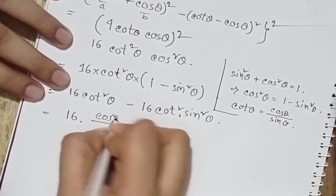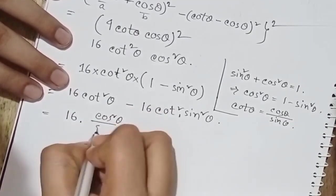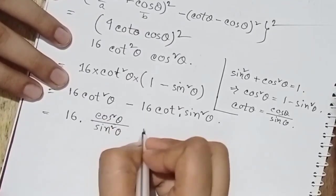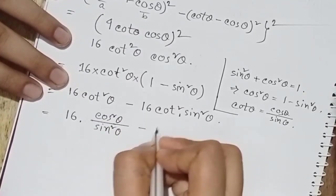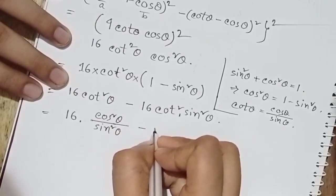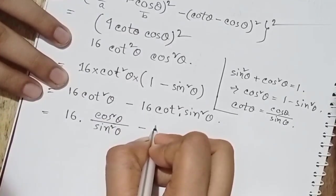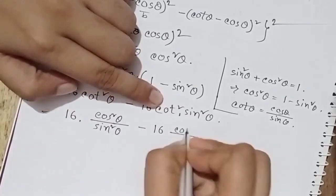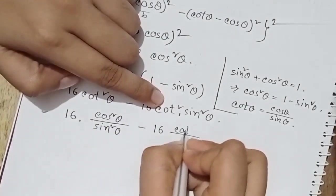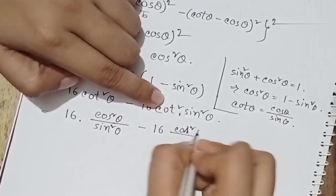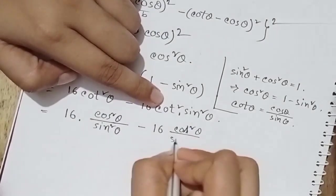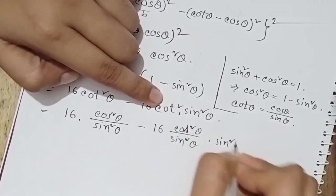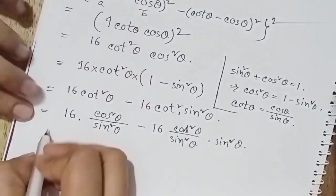So the expression is cos square theta by sin square theta minus, square by sin square theta into sin square theta.